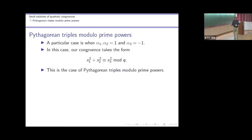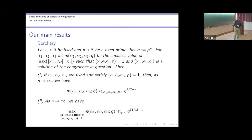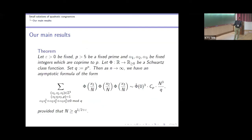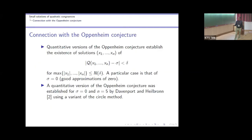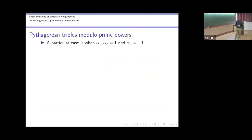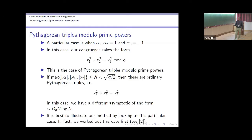In that larger range, we get roughly N³/q. In the range around q^{1/2}, the two asymptotics meet — that's an interesting transition range. This shows that q^{1/2} is a natural limit; we cannot expect the asymptotic N³/q to hold for N smaller than q^{1/2}. In any case we need N greater than the square root of the modulus.